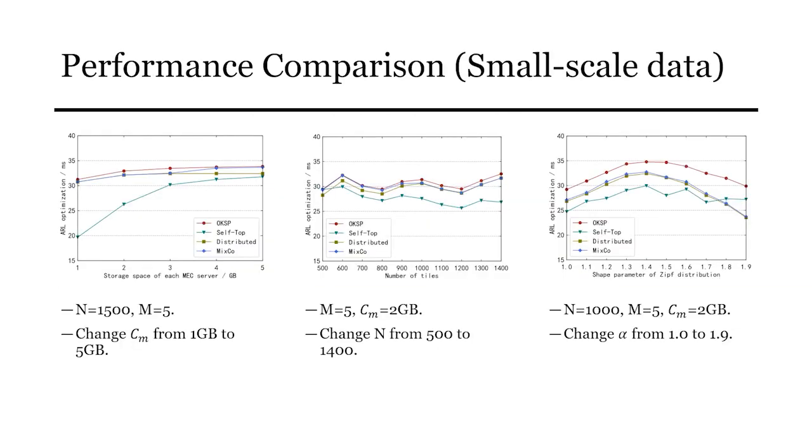In this part, we study the effect of the system parameters on the performance of the above four caching algorithms. The mixed-core data doesn't apply to the large-scale data, so we first test small-scale data and then remove the mixed-core and test large-scale data. For this picture, the ARL optimization of all caching algorithms increases as the storage space increases. Because by increasing the storage space, more tiles can be cached in the MEC cooperation domain, preventing more requests from being sent to the cloud.